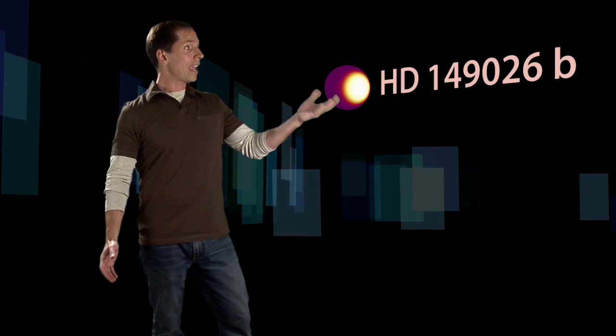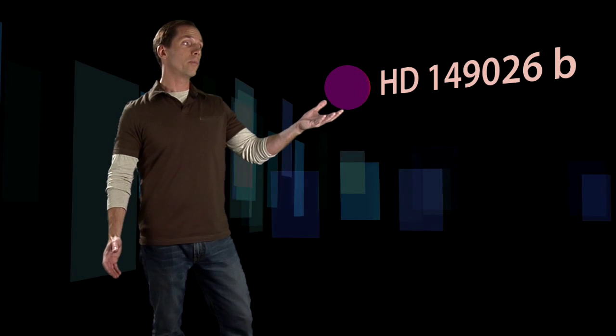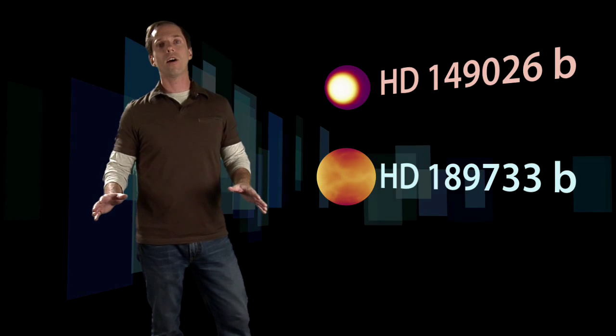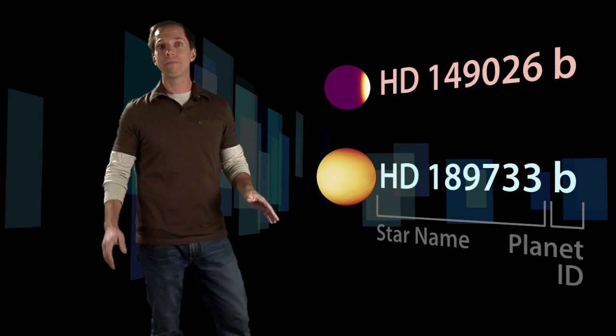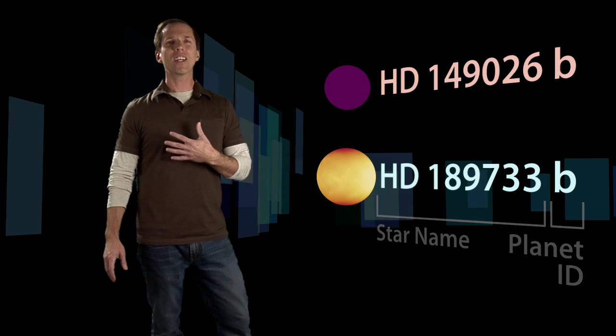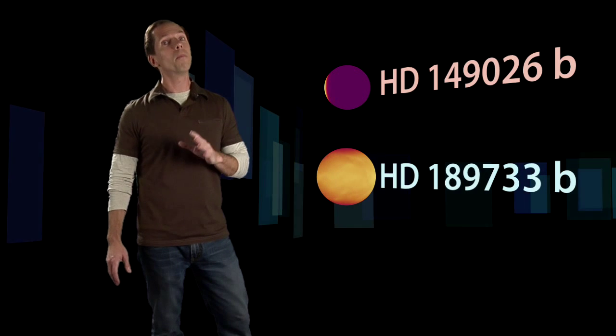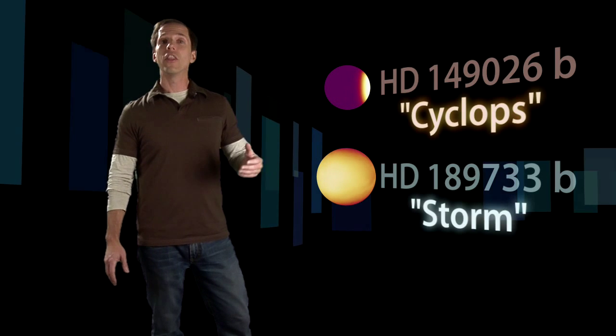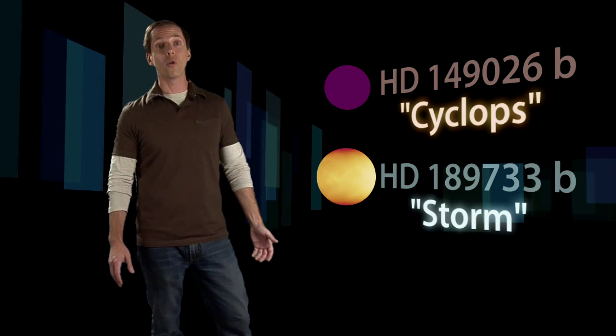Their official names, HD 149026b and HD 189733b, are based on the catalog numbers of their host stars. Personally, I'm going to call them something unofficial but easier to remember: Cyclops and Storm, the hottest and windiest known planets.